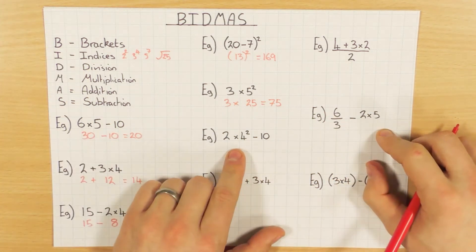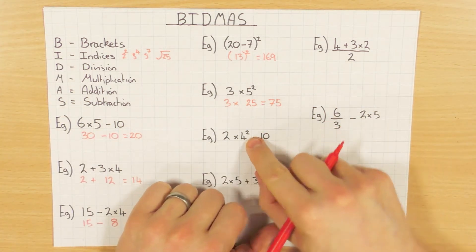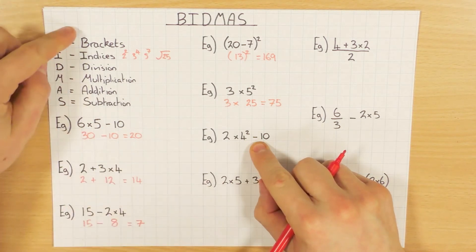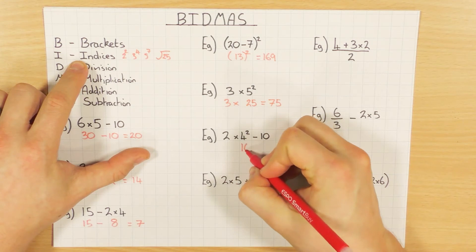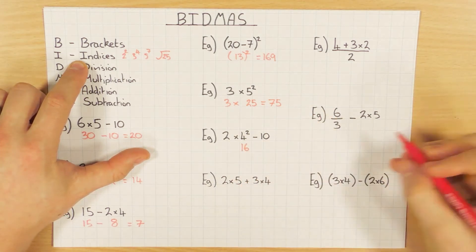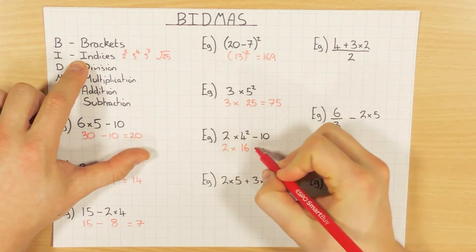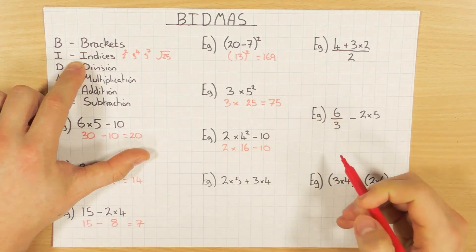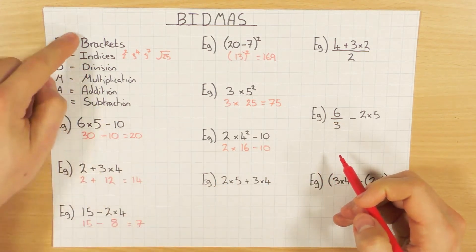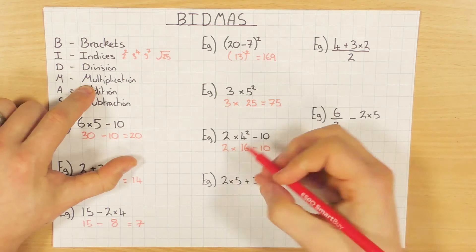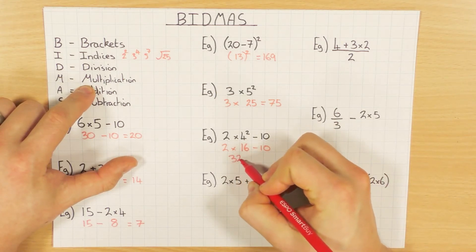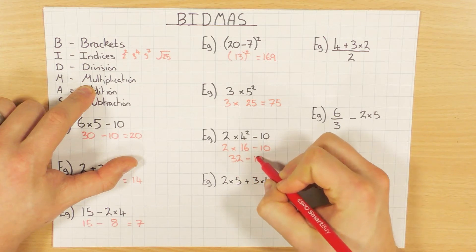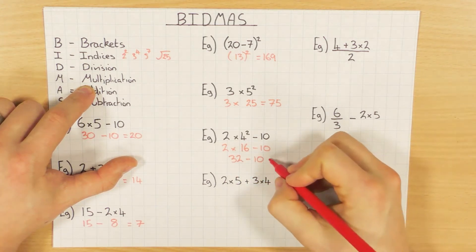This one has a multiplication, an indice, and a subtraction. First on the list is indices, so I do 4 squared — 4 times 4 — which is 16, then bring the rest of it down. Now I'm left with multiplication and subtraction, so multiplication comes first: 2 times 16 gives me 32, then minus 10 gives 22.